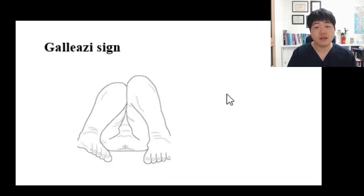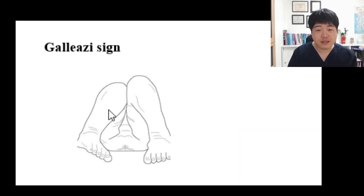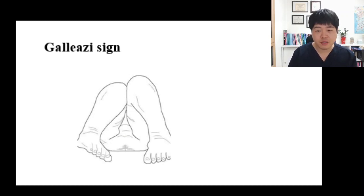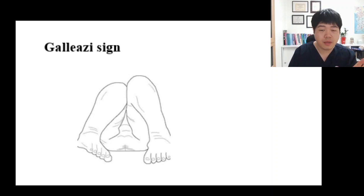What about the Galeazzi sign? The Galeazzi sign is used to check for hip dysplasia in babies after three months of age. Can you see the difference in position between the two legs? That difference is called the Galeazzi sign — it means something is happening with the hip joint, so you can suspect a problem. The important point for the MPTE exam is the duration: you should check babies at three months.